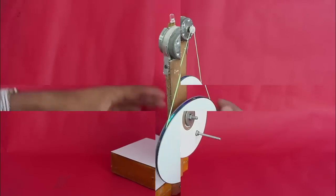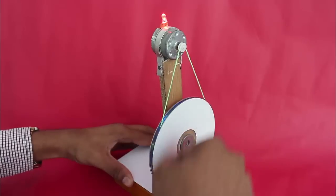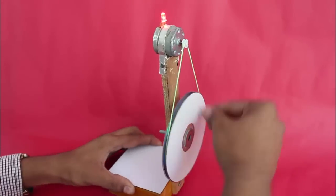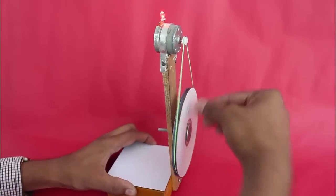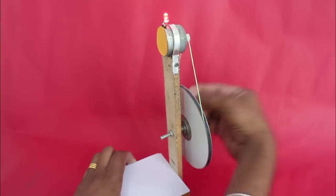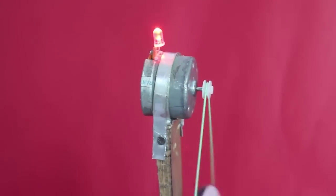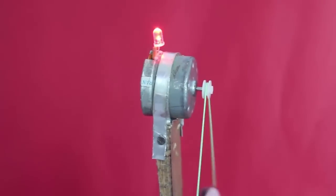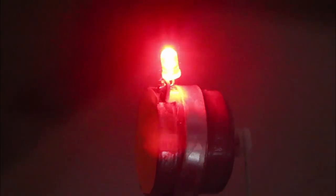As you crank the handle, the big pulley spins the motor pulley at a very fast rate. This generates an EMF and the current is sufficient to light up the lighthouse LED. This model also shows that a motor can be easily converted into a generator, because it is essentially the toy motor which is generating the current.